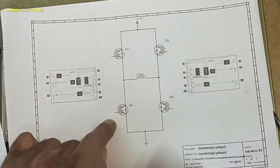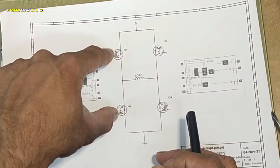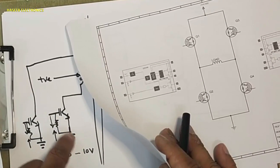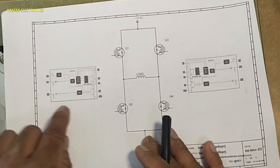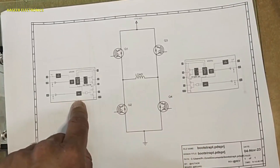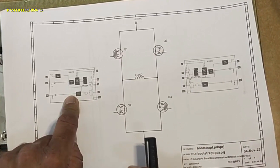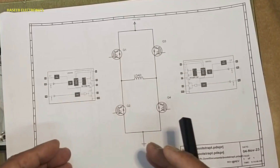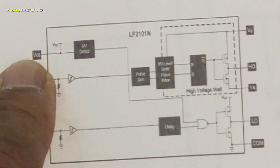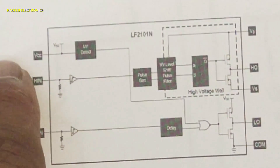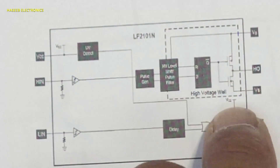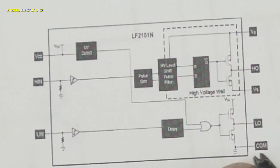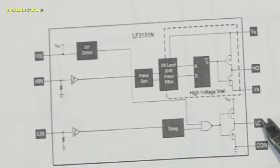To power on these IGBTs, as discussed, we need voltage from gate to emitter or gate to source. For that purpose, a high-side and low-side gate driver IC is used — such as IR2101, IR2102, LF2101, and similar ICs. These are called high-side and low-side drivers. The VCC supply voltage is fed in, and this driver IC receives positive and common voltage to provide pulses to the low-side IGBT.